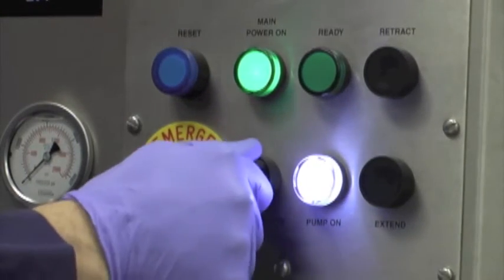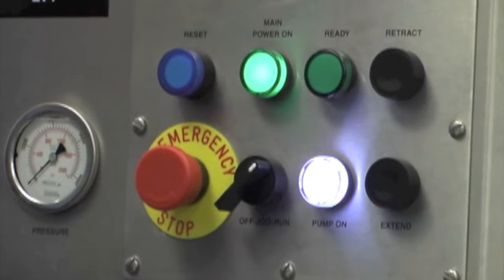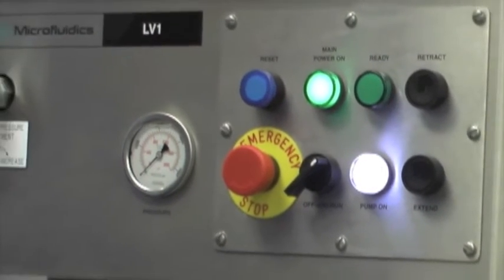Now you can set the pressure level for the equipment. To do this, first turn the three position switch from off to the rum position.